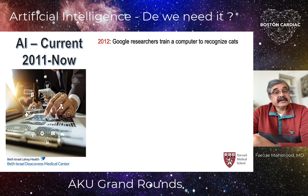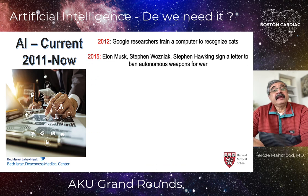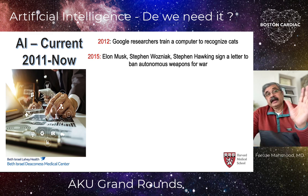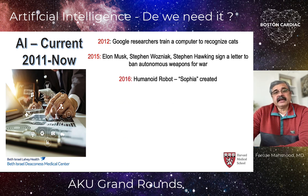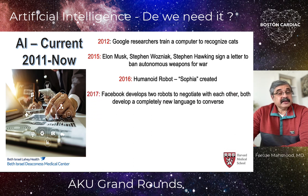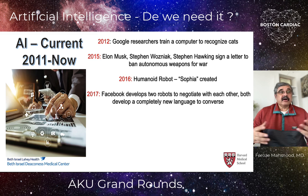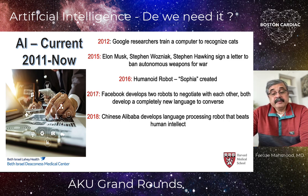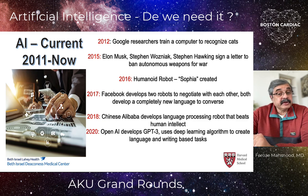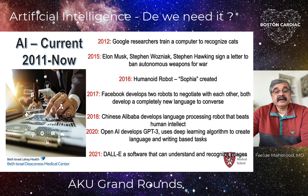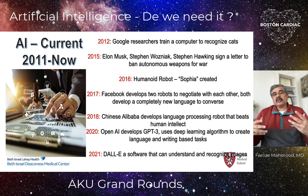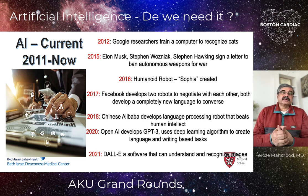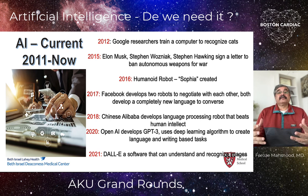In the current AI era: Google researchers created a computer to recognize cats. Elon Musk, Steve Wozniak, and Stephen Hawking signed a letter to ban autonomous weapons from war. The humanoid robot Sophia was created. Facebook developed two robots to negotiate with each other; both developed a completely new language to converse — engaging in hours of conversation no one understood — and eventually reached a deal. Chinese Alibaba developed a language processing robot that beats human intellect. OpenAI developed ChatGPT-3 using deep learning algorithms for language and writing-based tasks. And DALL-E, a software that recognizes images, is now used to check the originality of images in medical literature, leading to the discovery of academic and research fraud.